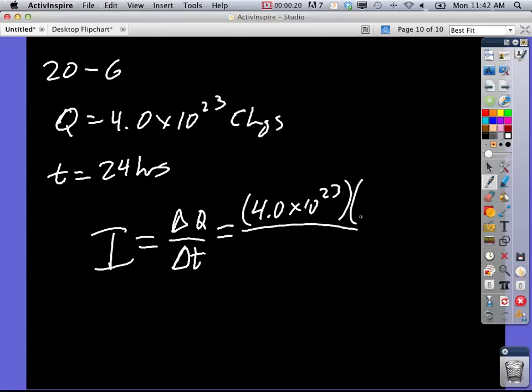Okay, we have to do that times 1.6 times 10 to the minus 19 coulombs per electron.